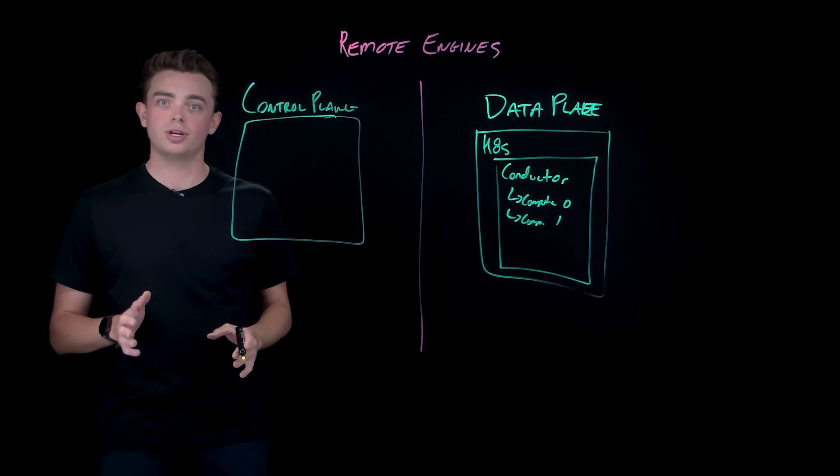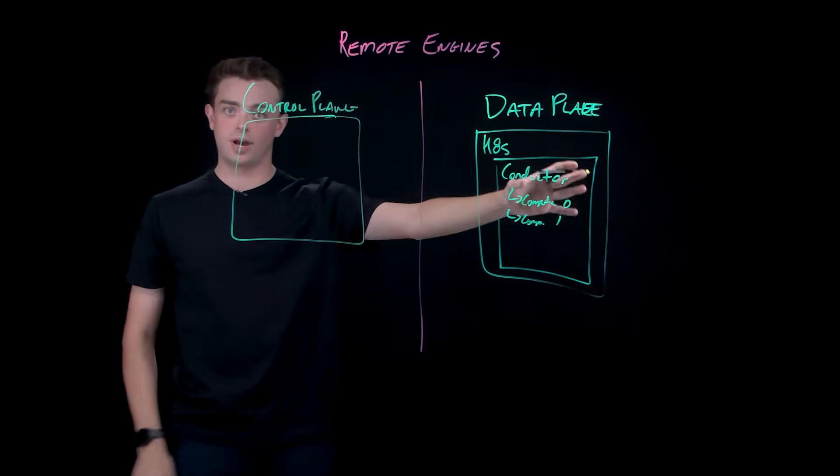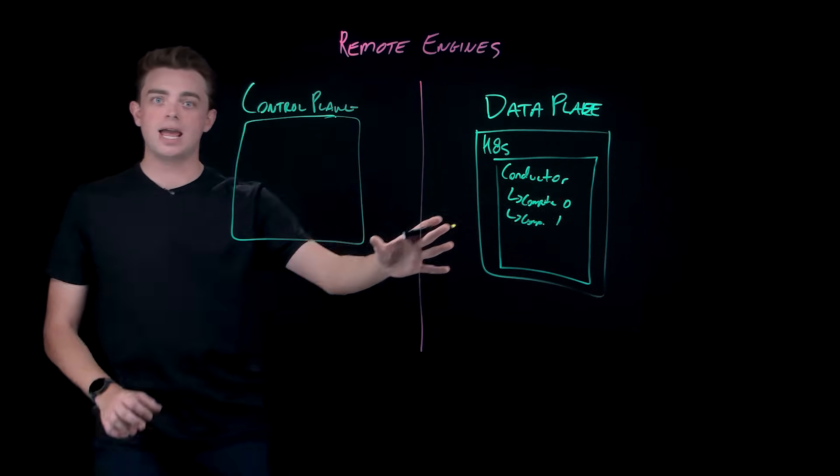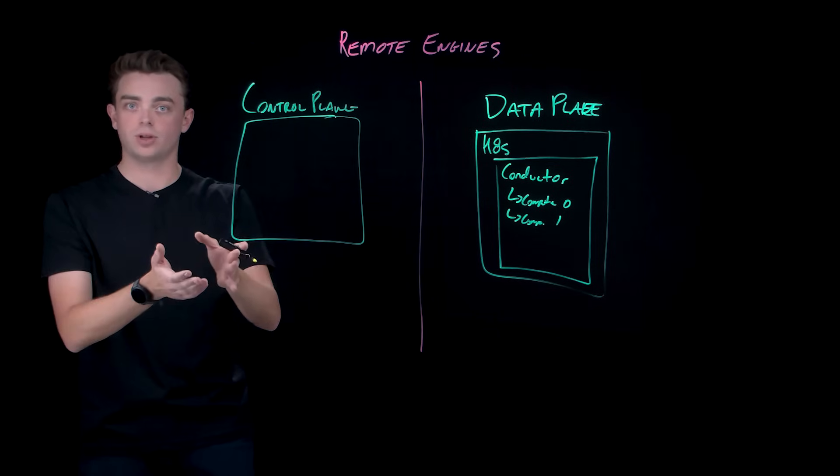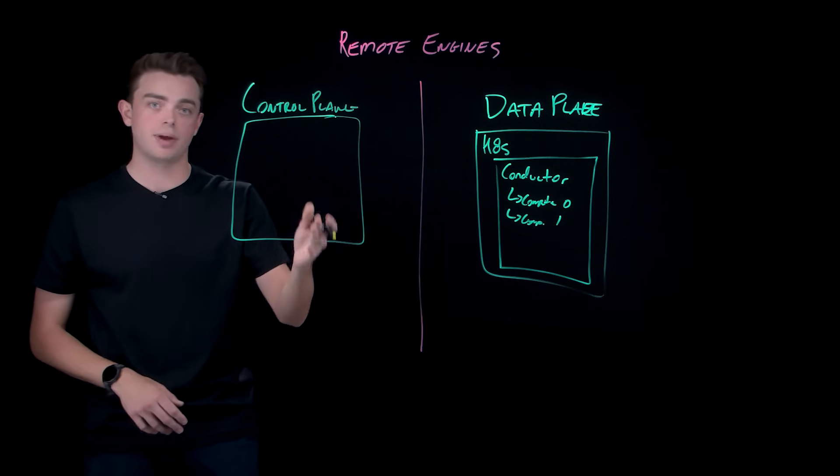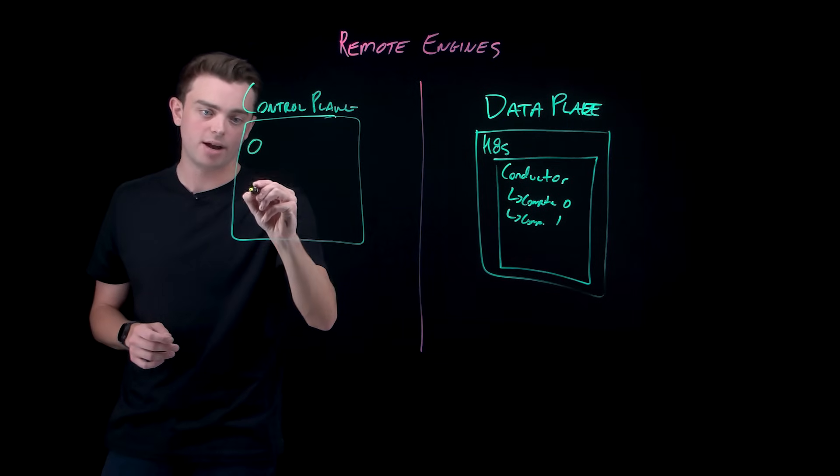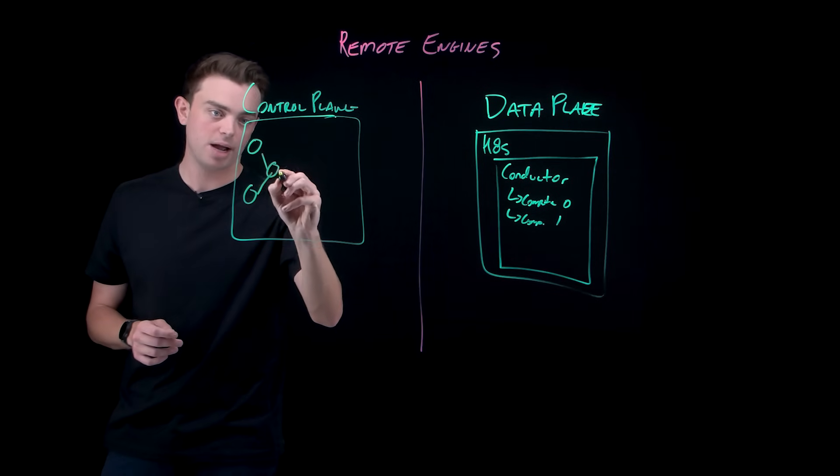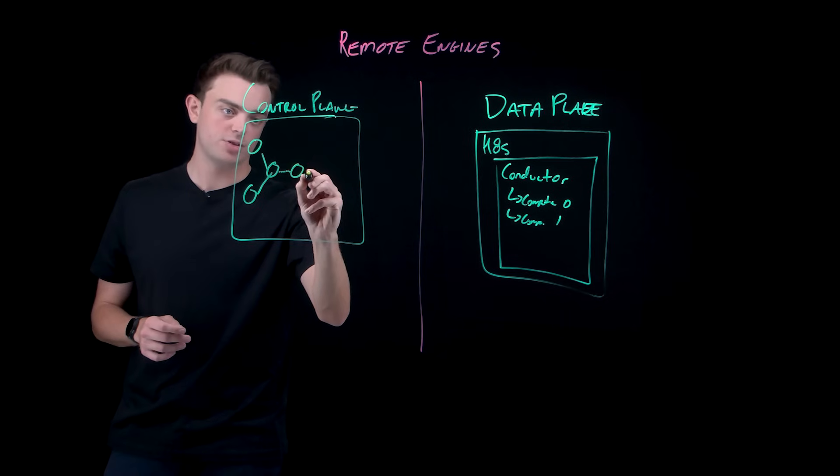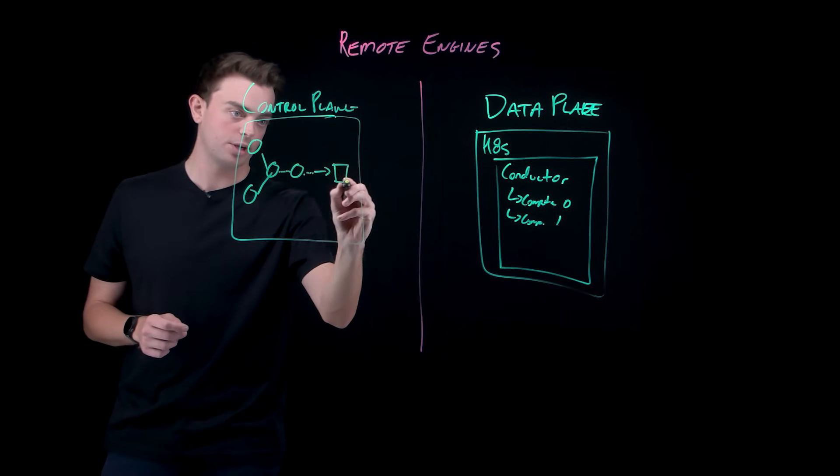A quick example could be the data plane over here on the right, where I have my remote engine, and what can be referred to as the control plane over here on the left, where I design and manage my jobs. So let's say I have a simple ETL job, where I have two sources being combined into one with some transformations in the middle, and I'm writing to a target.